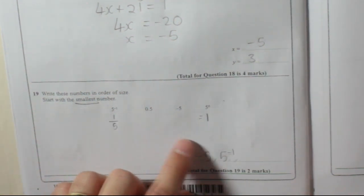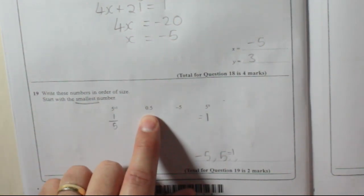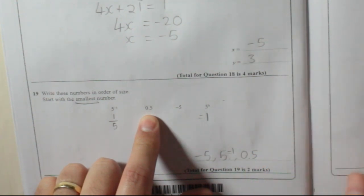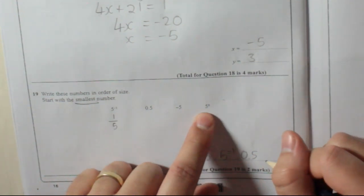What did I say was next? I think I said 0.5 is next. And then the largest number is 1, which is 5 to the power of 0.